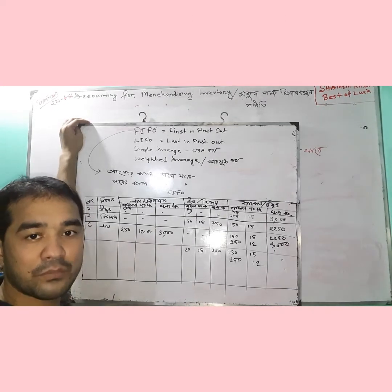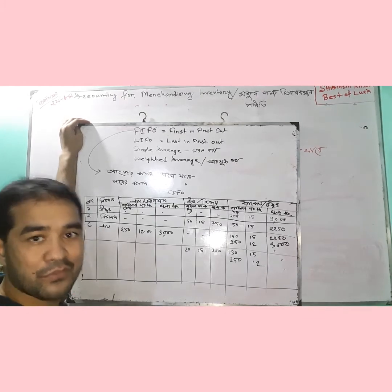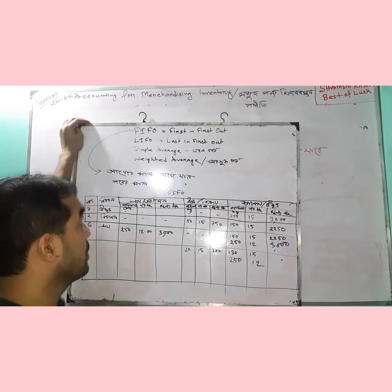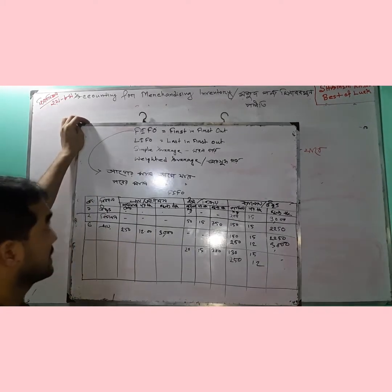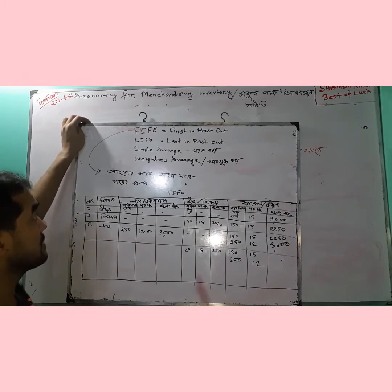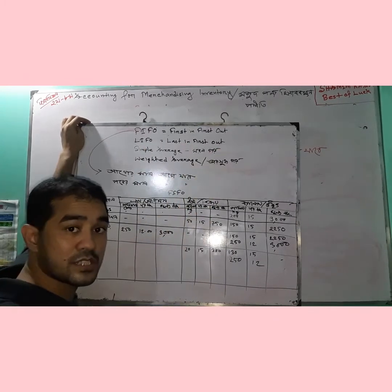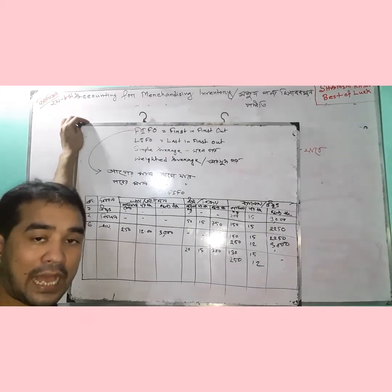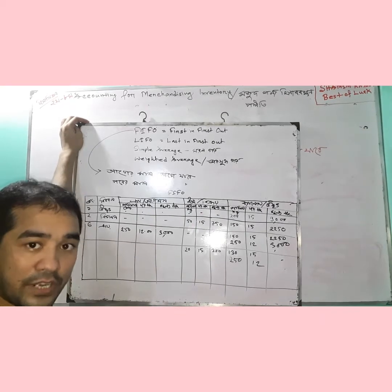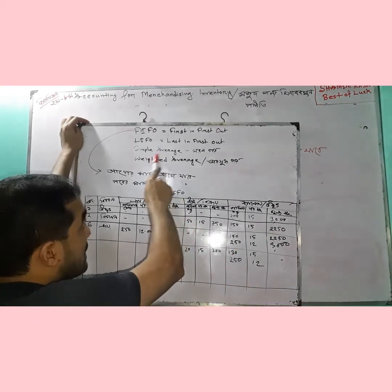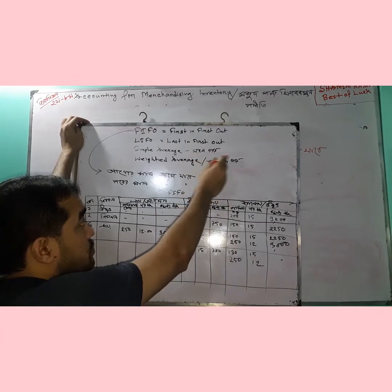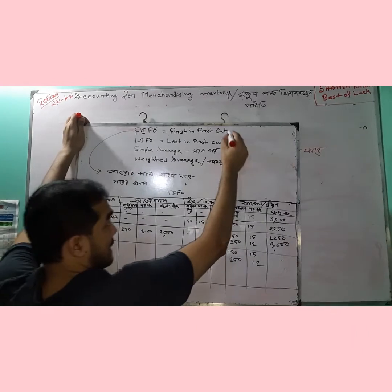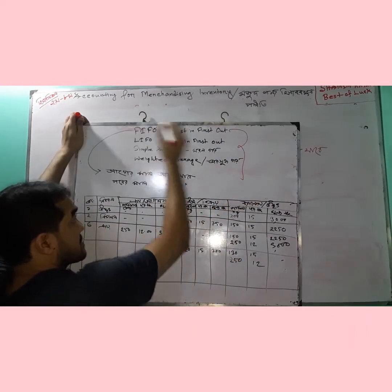Turn on the FIFO. The first to enter is the first to come out — first in, first out. If you are a good person, you can do well. This is the result: FIFO means first in, first out.